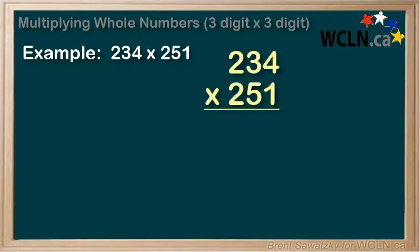Now we have 3 digits on the bottom. We'll start the same way we did before, starting with the 1. We recall that 1 times any number is just itself, so we can just write 234 here.